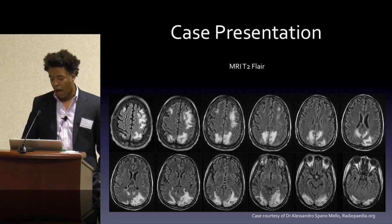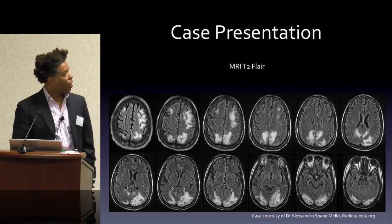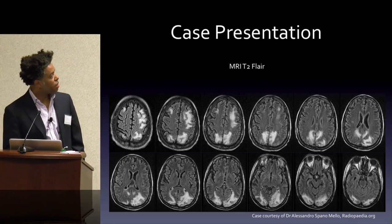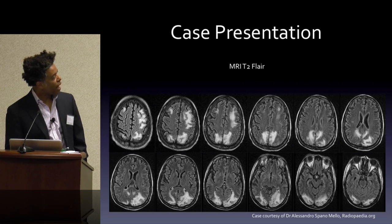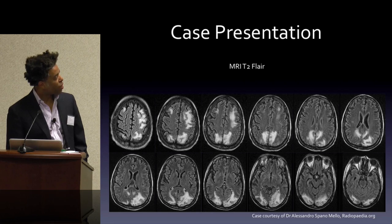He got an MRI, and on his MRI you'll note that he has these posterior lesions, predominantly white matter, extending anteriorly and posteriorly throughout his brain, only on T2 FLAIR, not really involving the cortex, as you see right here.